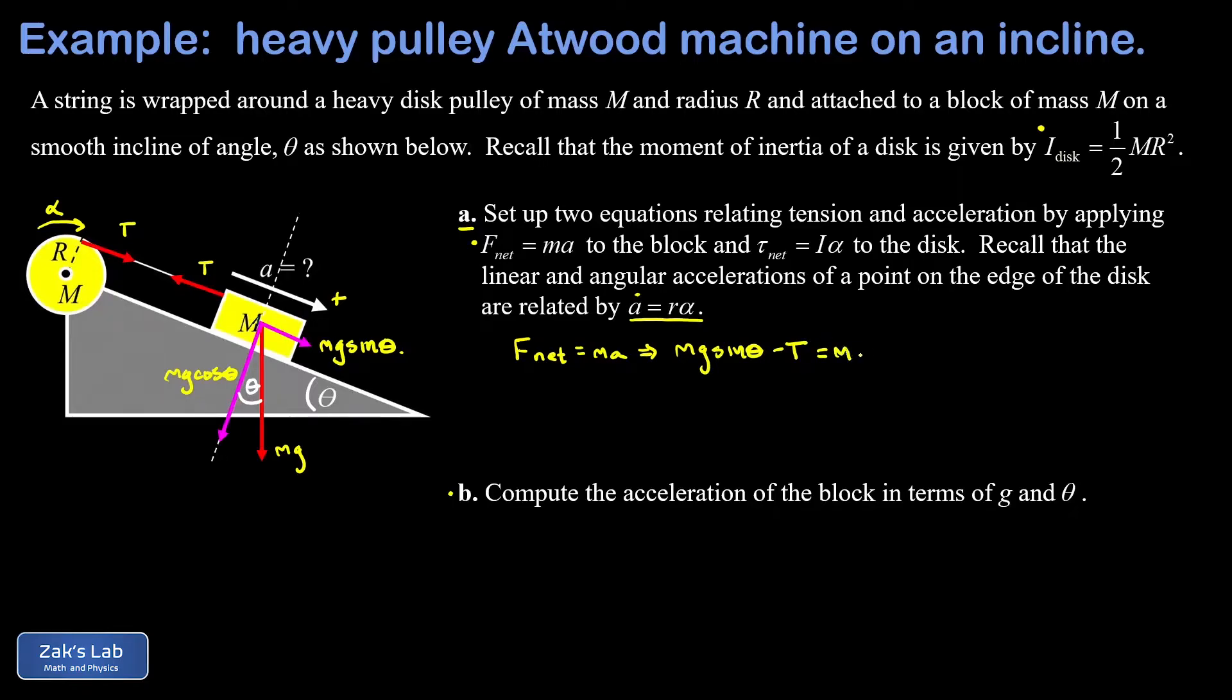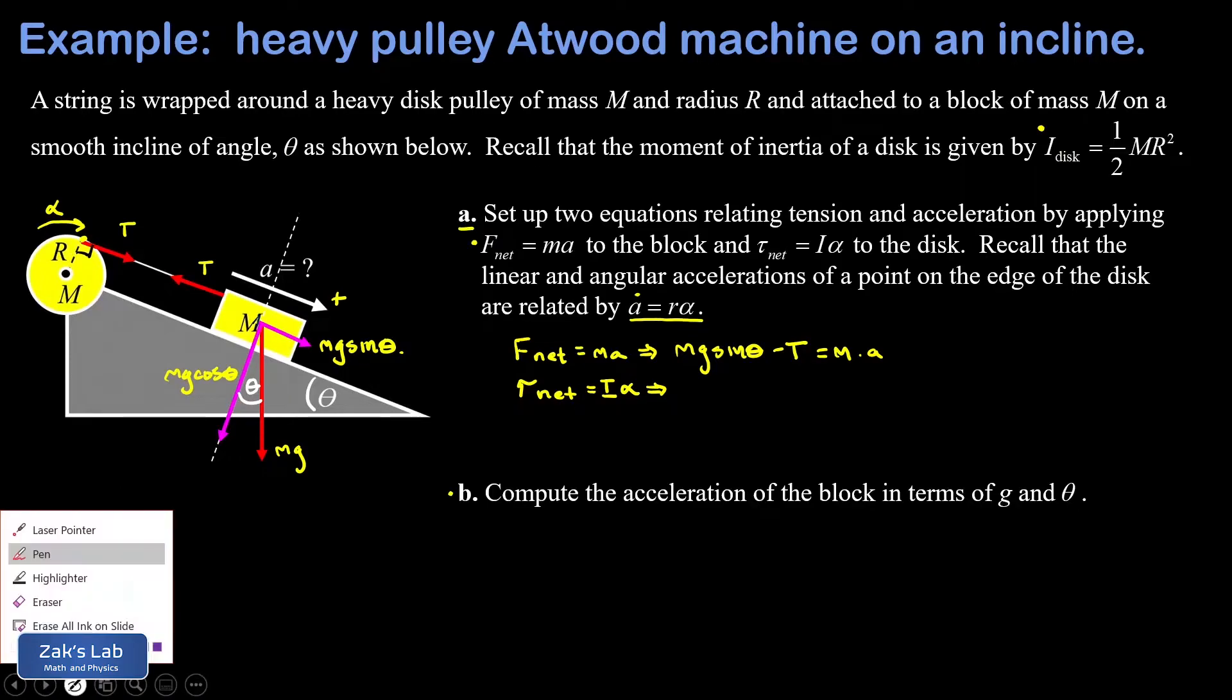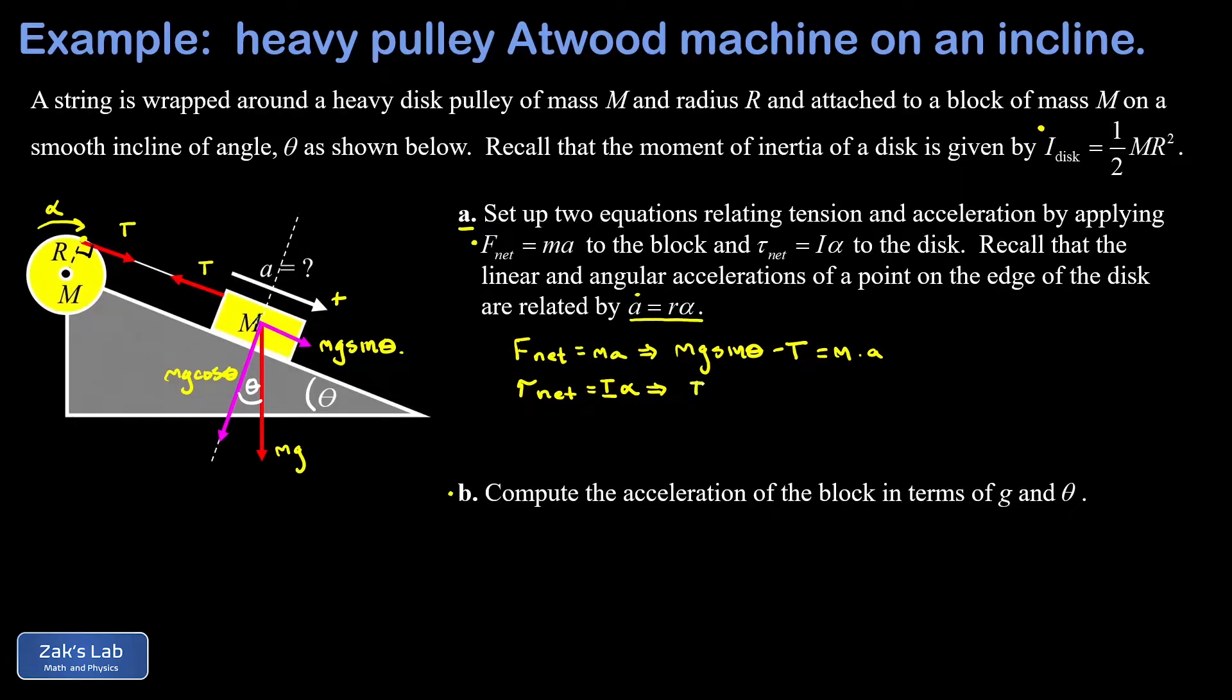Now we analyze the disc and look at the net torque on it, which equals I times alpha, its angular acceleration. There's only one force exerting a torque on this disc—that string pulling tangentially with a radius of r from the center of rotation. Because it's coming off tangentially, that automatically makes it perpendicular, which makes torque very simple to compute. My net torque is just T times r, and that's equal to I times alpha.